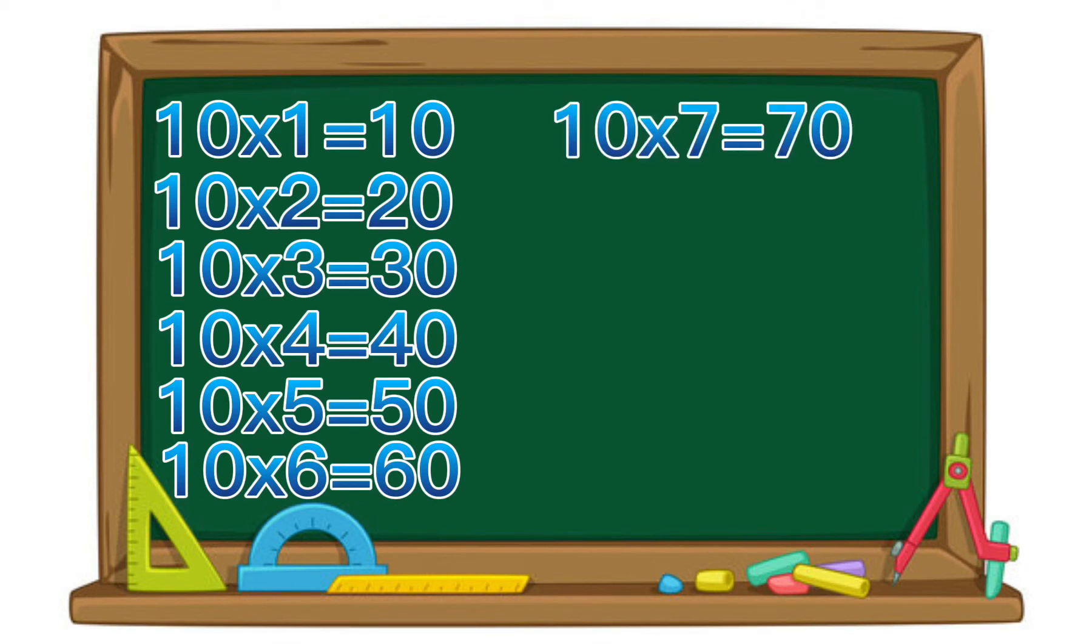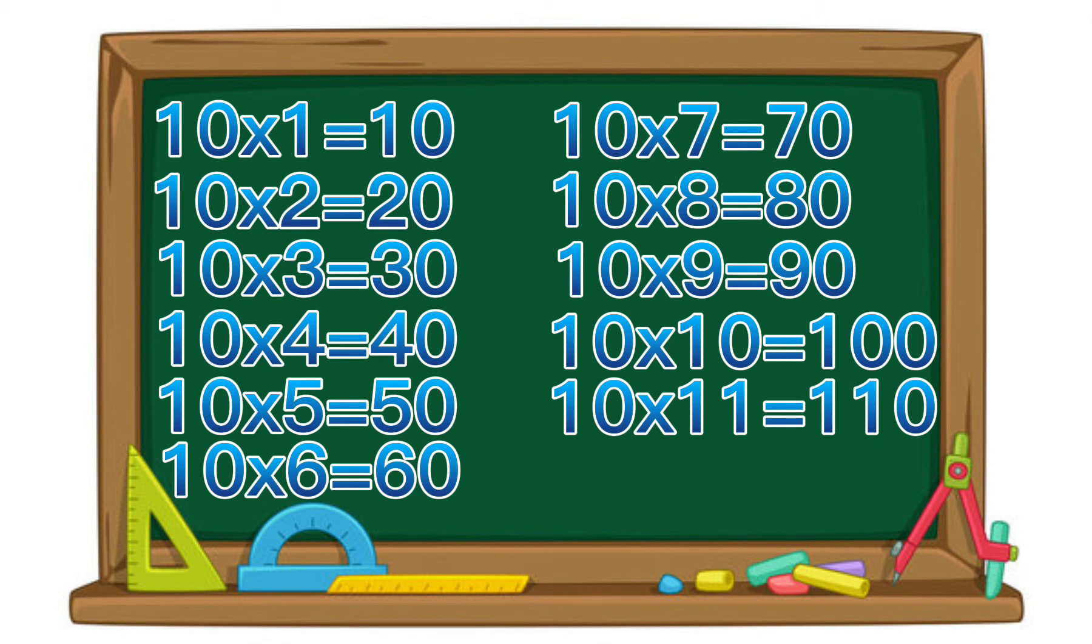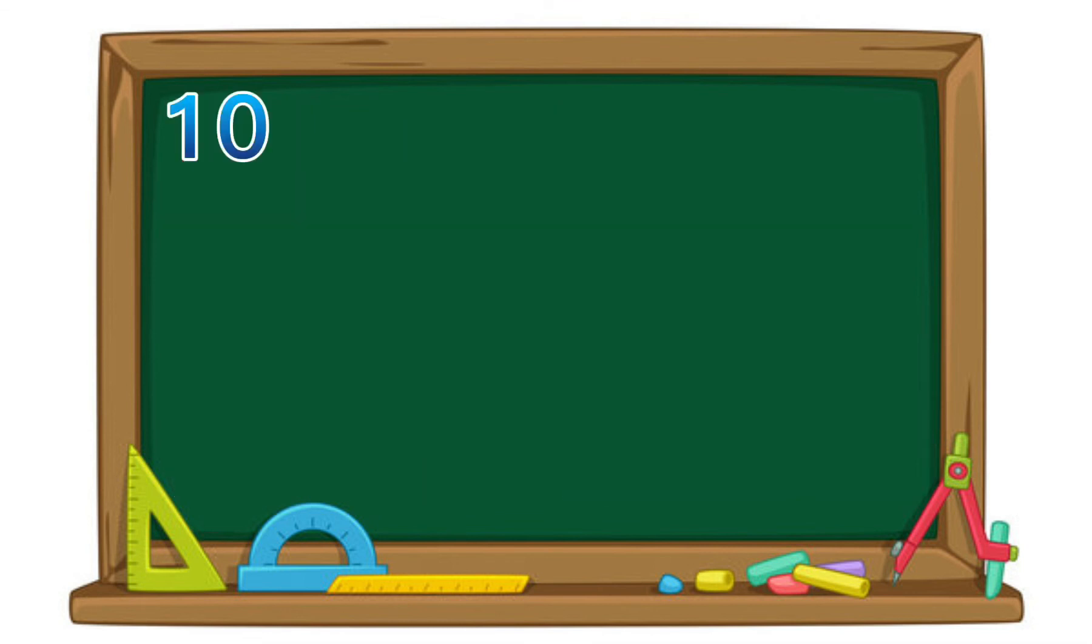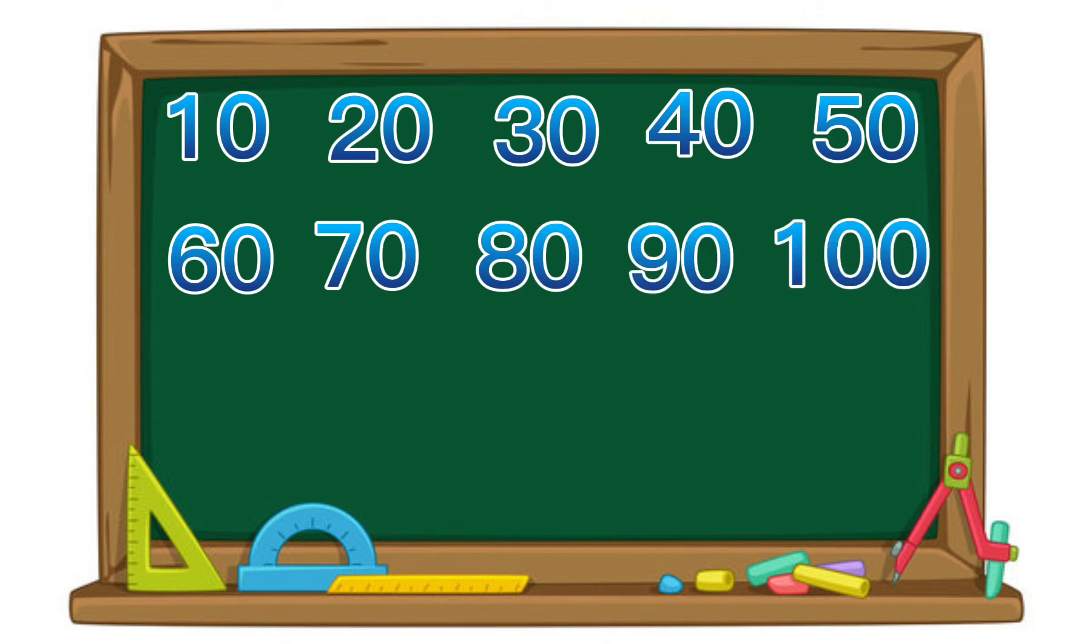10 times 7 equals 70. 10 times 8 equals 80. 10 times 9 equals 90. 10 times 10 equals 100. 10 times 11 equals 110. 10 times 12 equals 120. 10, 20, 30, 40, 50, 60, 70, 80, 90, 100.